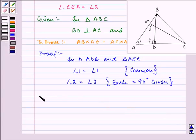which is already given to us in the question. And thirdly, therefore, triangle ADB is similar to triangle AEC by AA similarity.